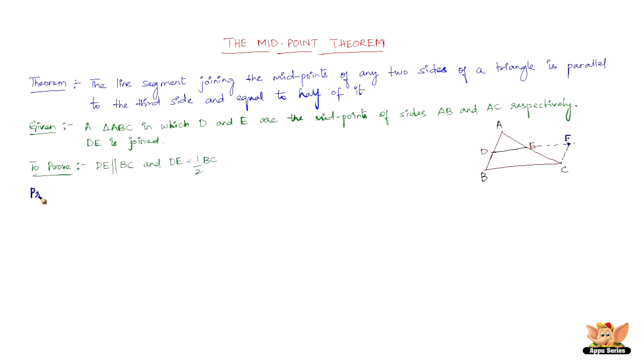Now let us go to the proof part. As far as the proof is concerned, we need to consider two triangles: triangles AED and CEF. Now considering these two triangles, we have AE equals CE because it is already said that E is the midpoint of AC.